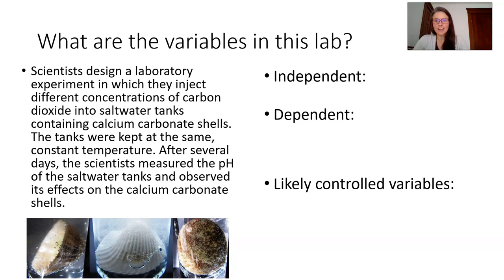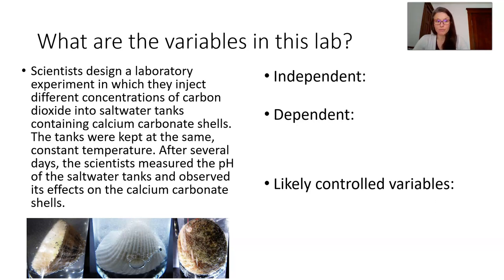After several days, the scientists measured the pH of the salt water tanks and observed its effects on the calcium carbonate shells. So what are the independent and dependent variables and the likely controls they kept the same? Ready?